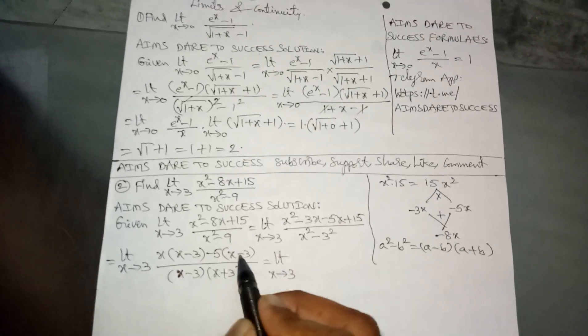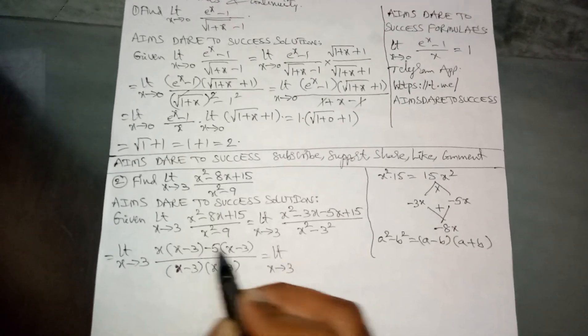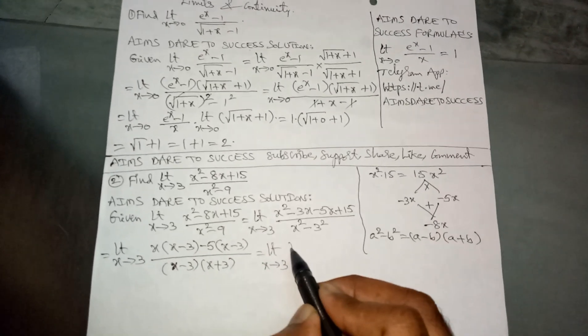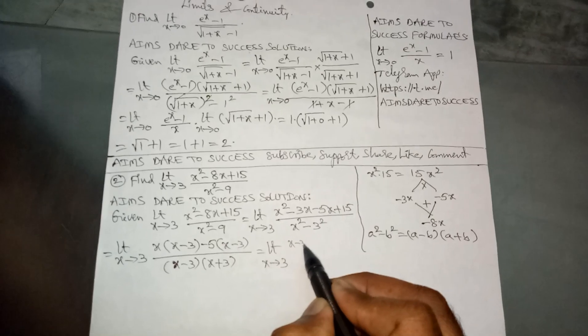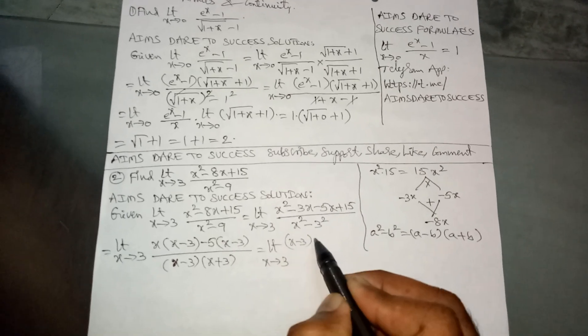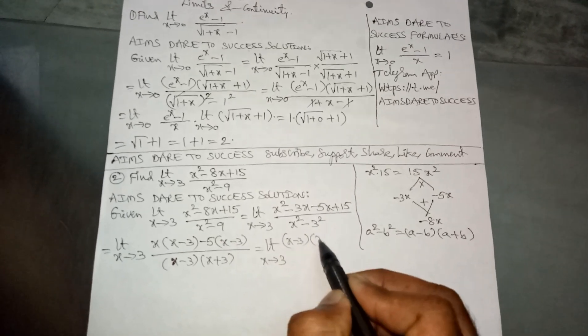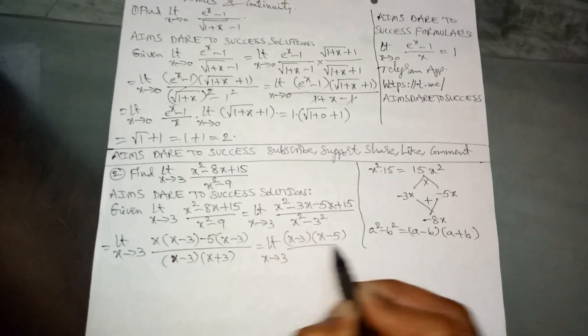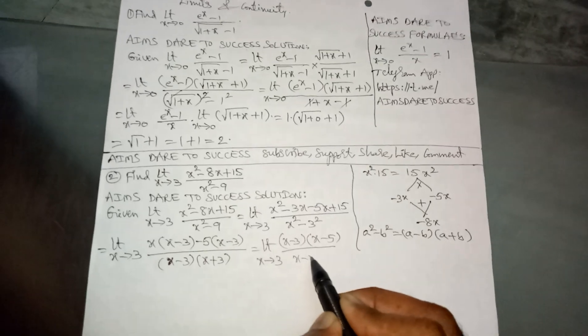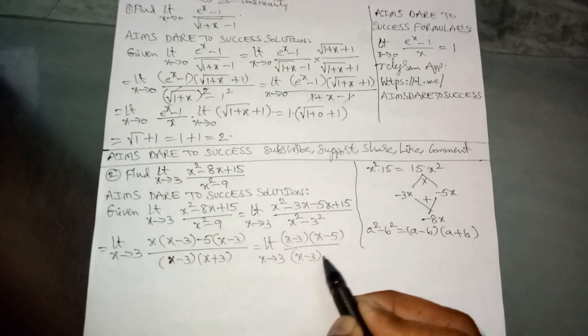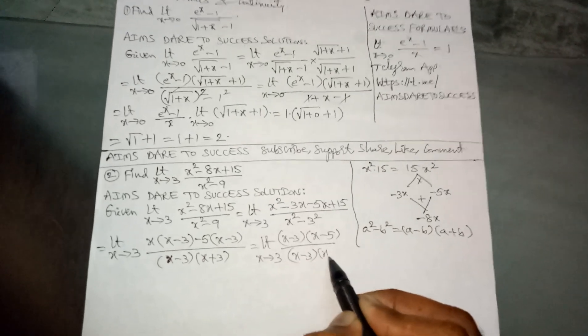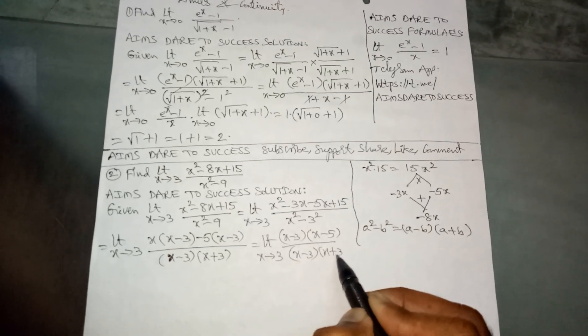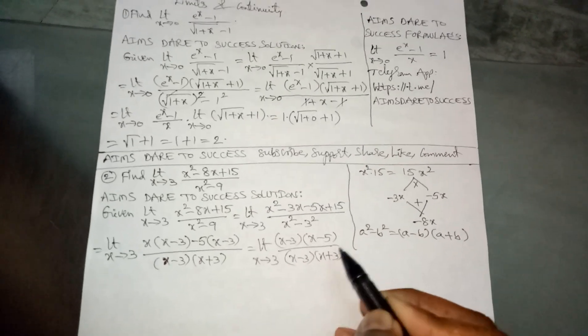From the first and second brackets, (x - 3) is common in the numerator, giving (x - 3)(x - 5). The denominator is (x - 3)(x + 3). So the expression becomes limit x tends to 3 of (x - 3)(x - 5) by (x - 3)(x + 3).